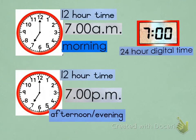Now on this first slide you will notice we have two clocks. What do you notice about them? That's right — they are both 7 o'clock. They both show 7 o'clock.